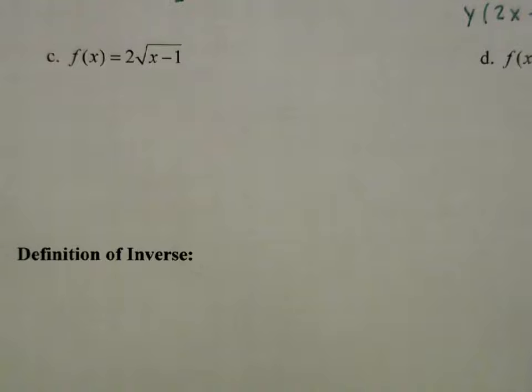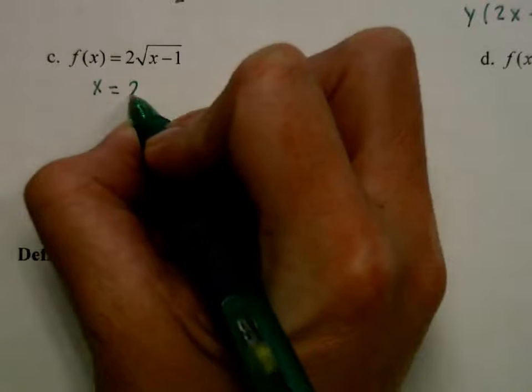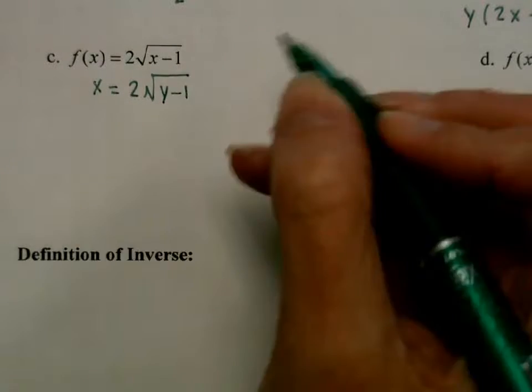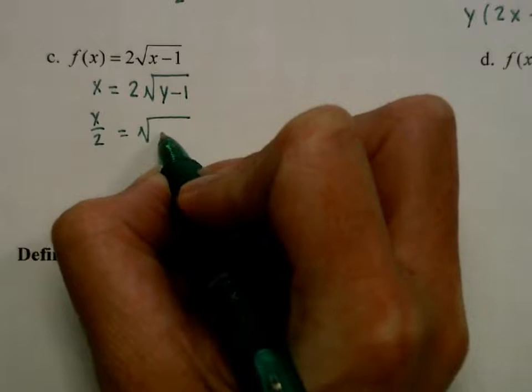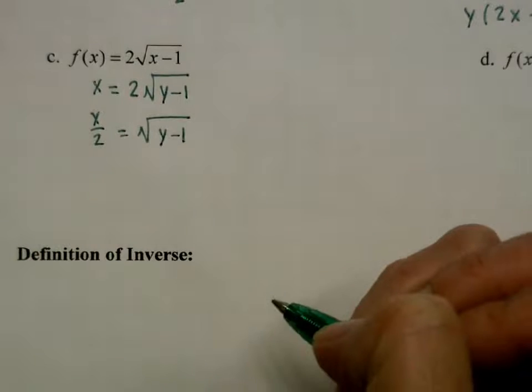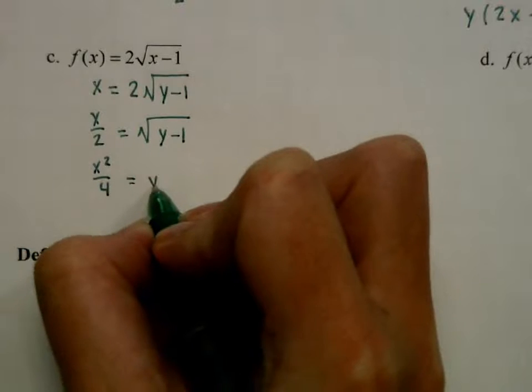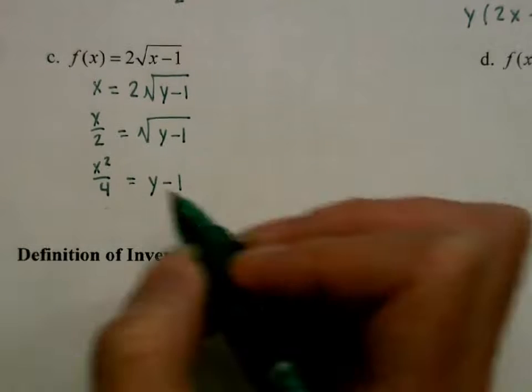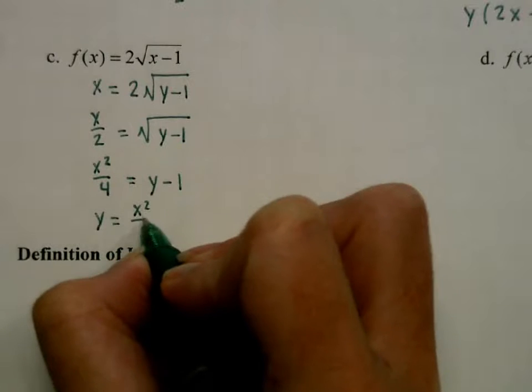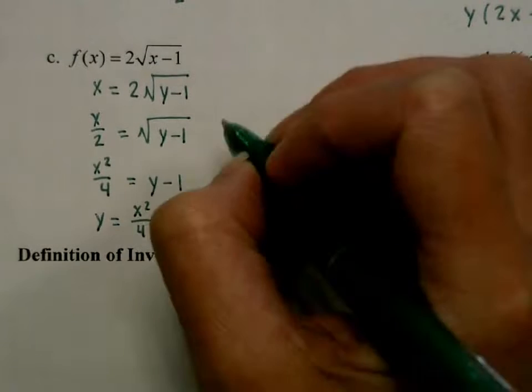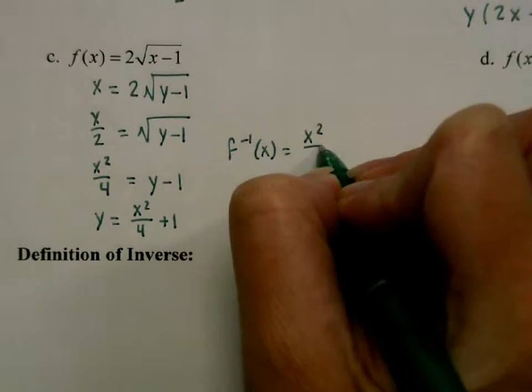x equals 2√(y - 1), so we'll divide by 2. Then square both sides. So I'll have x²/4 equals y minus 1. So y is going to be x²/4 + 1, which means my inverse is x²/4 + 1.